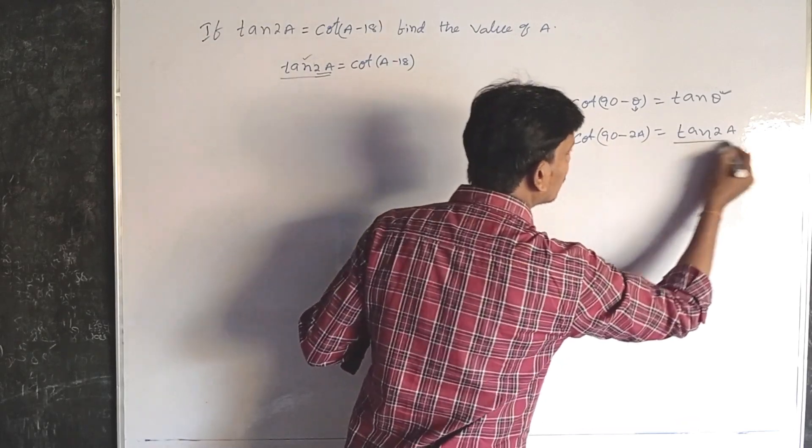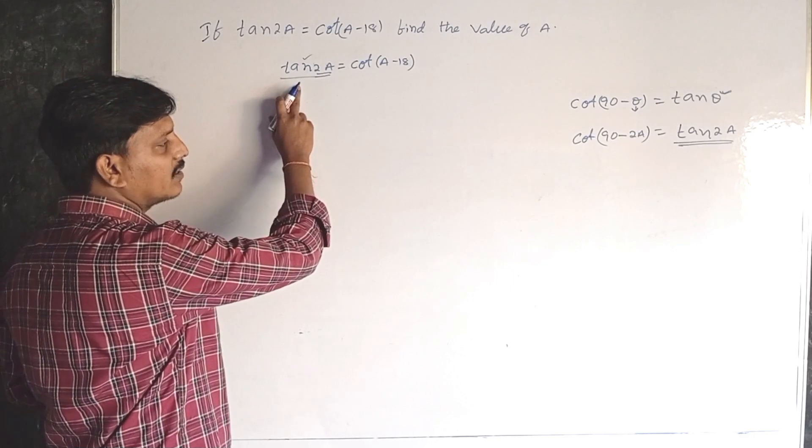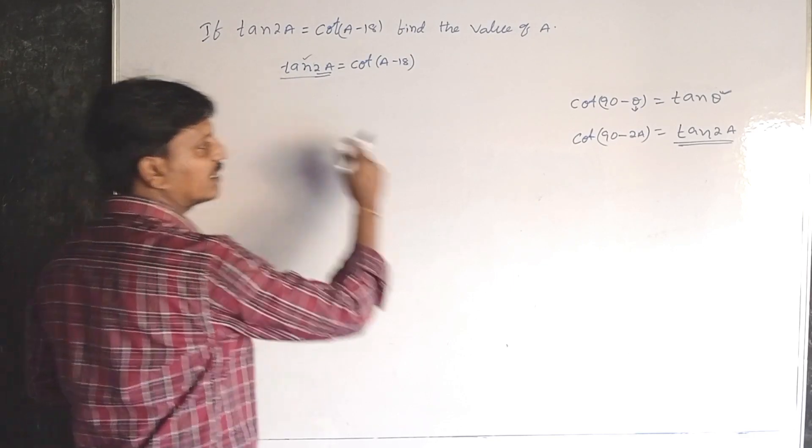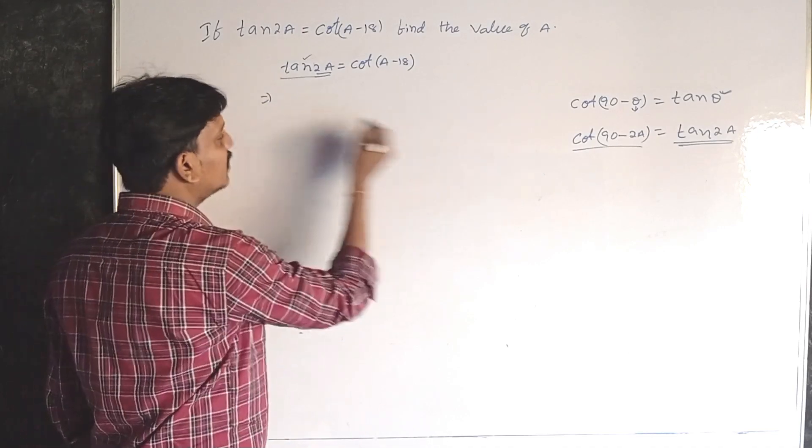That means tan 2a - in this place, in place of tan 2a, we can write cot(90 minus 2a). Now cot(90 minus 2a) is equal to cot(a minus 18).